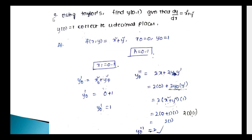Third problem: Using the Taylor series, find y(0.1) given that dy/dx = x² + y² and y(0) = 1, correct to 4 decimal places. Here f(x, y) = x² + y², initial condition x₀ = 0, y₀ = 1, and h = 0.1. So y₀' = x₀² + y₀² = 0 + 1 = 1.